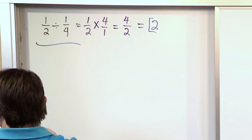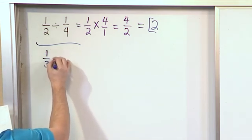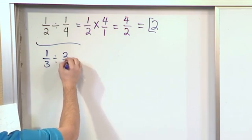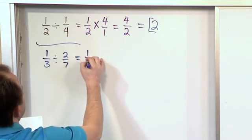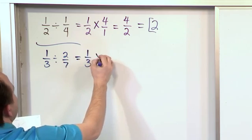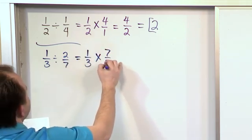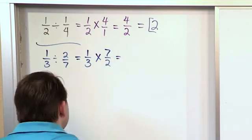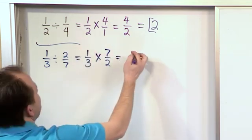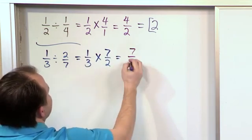So let's see what happens when we have 1 third divided by 2 sevenths. Well, same sort of thing. We're going to take the first fraction, leave it alone, take the division, change it to multiplication, take this fraction, flip it over. So that becomes 7 halves. And then we will multiply tops. 1 times 7 is 7. 3 times 2 is 6.